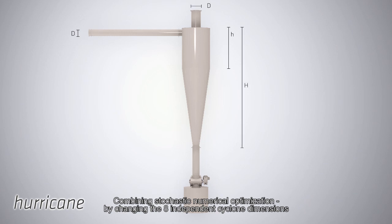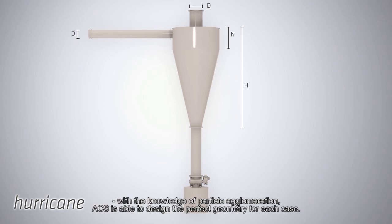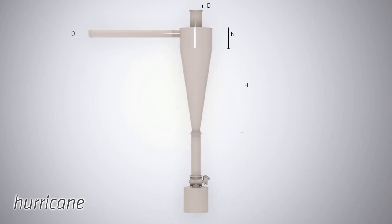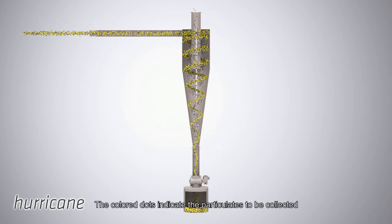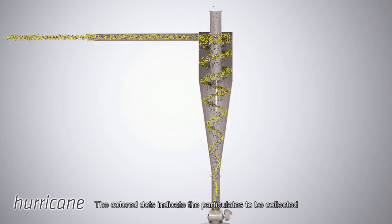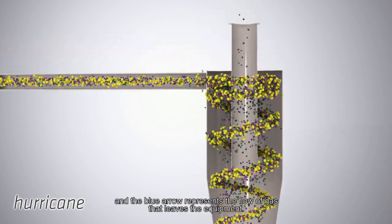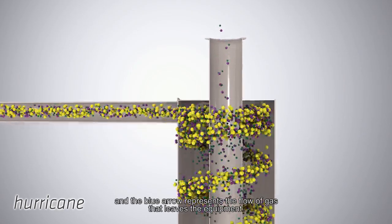Combining stochastic numerical optimization by changing the eight independent cyclone dimensions with the knowledge of particle agglomeration, ACS is able to design the perfect geometry for each case. The colored dots indicate the particulates to be collected and the blue arrow represents the flow of gas that leaves the equipment.